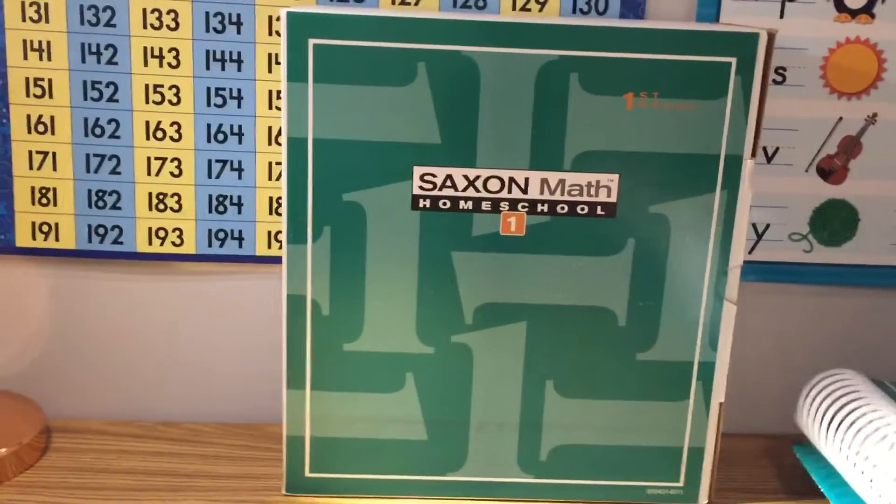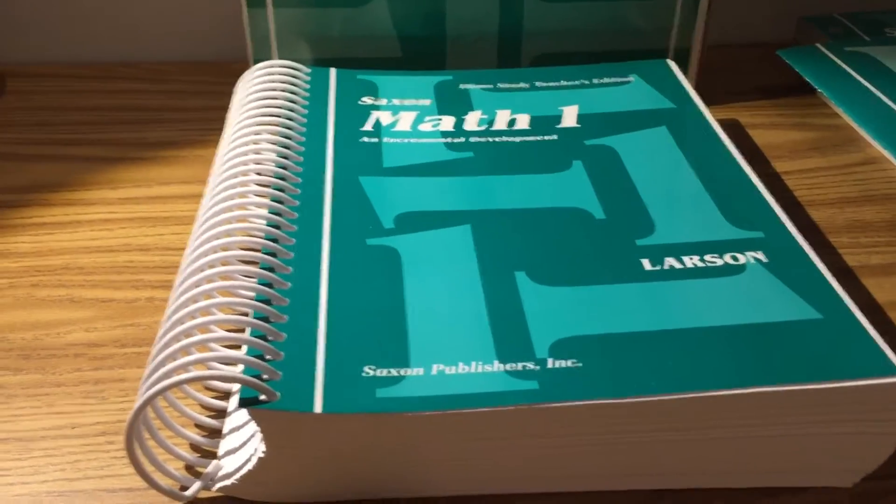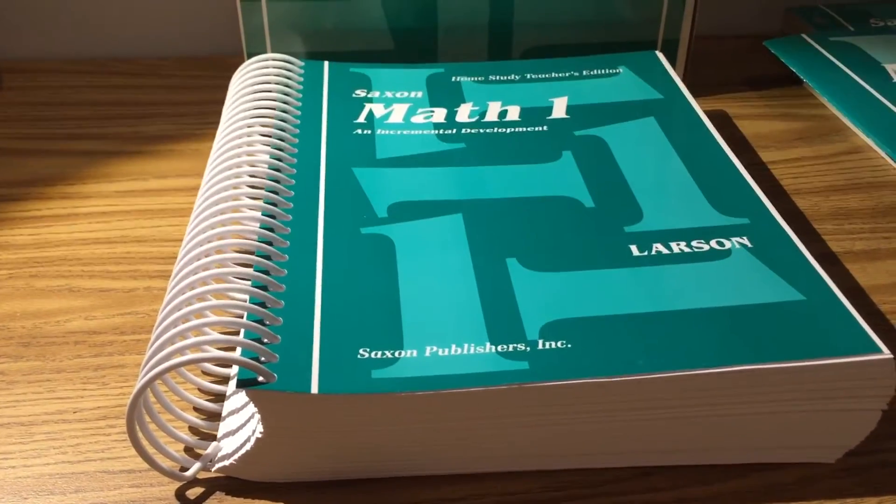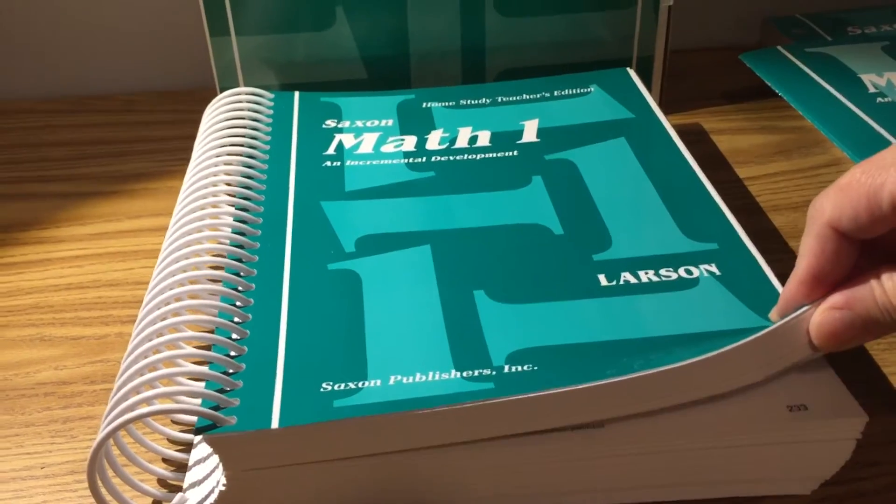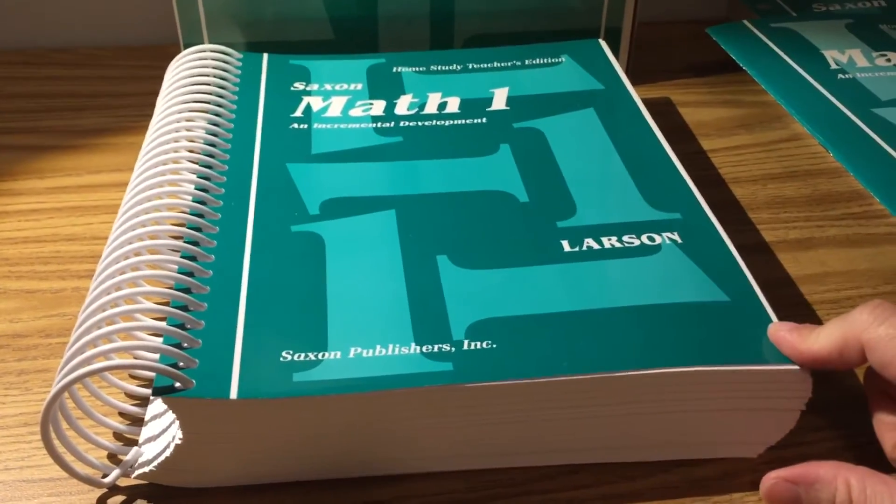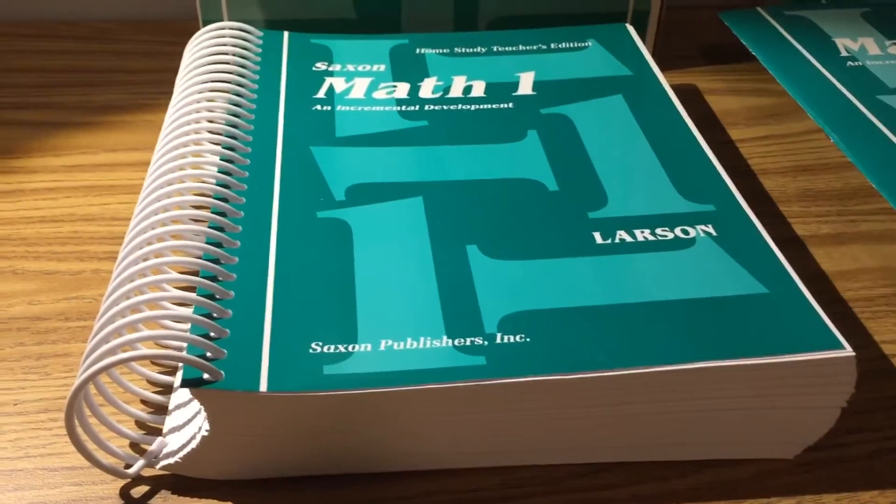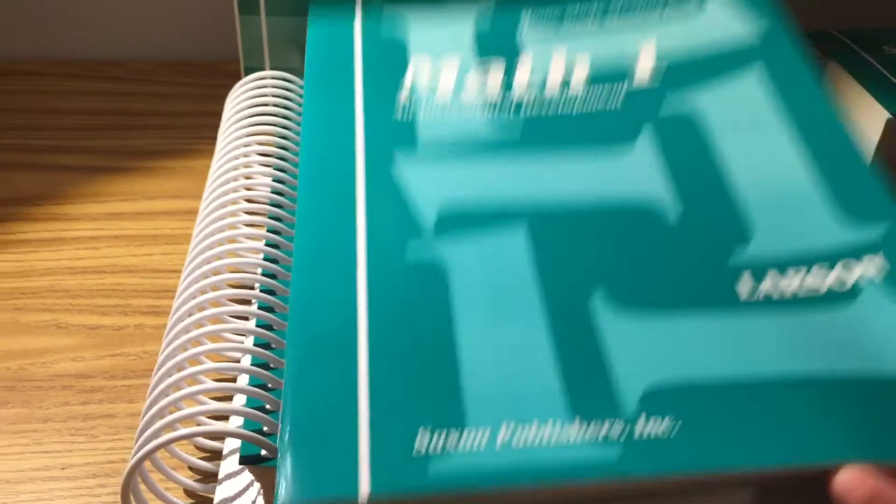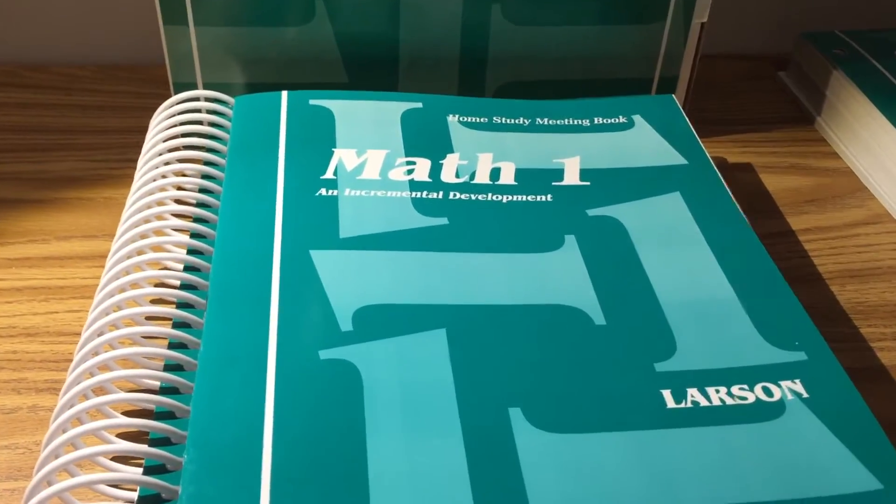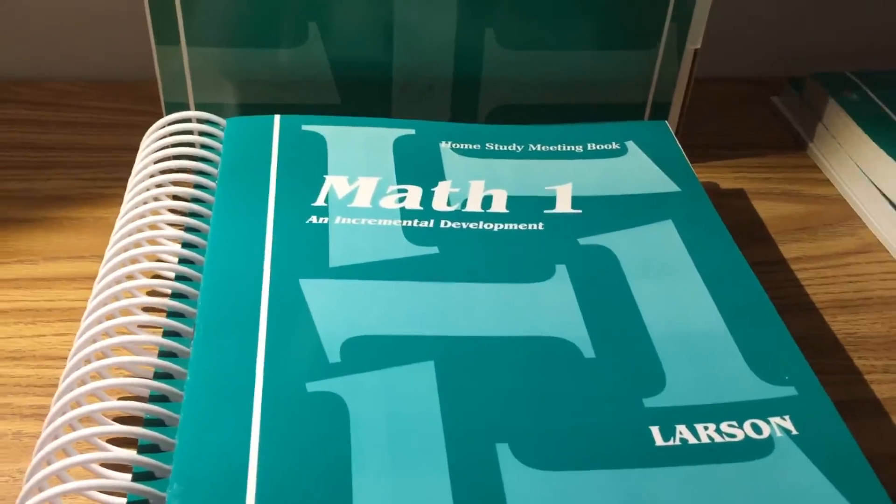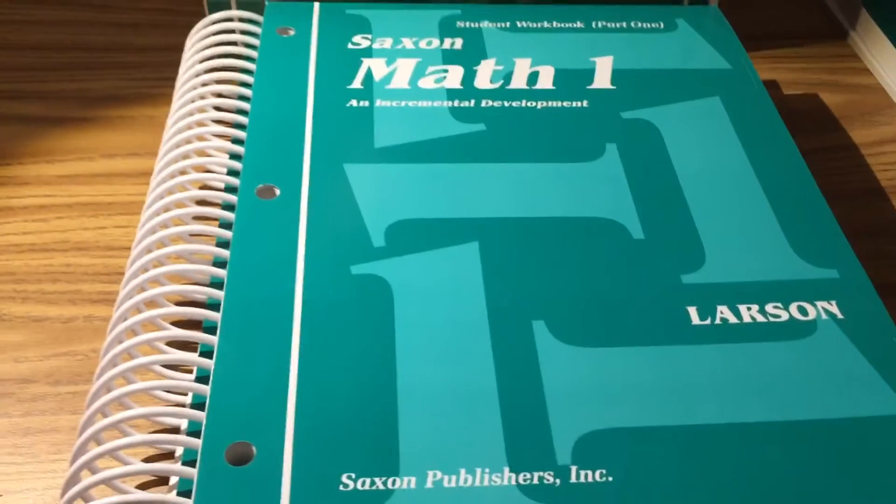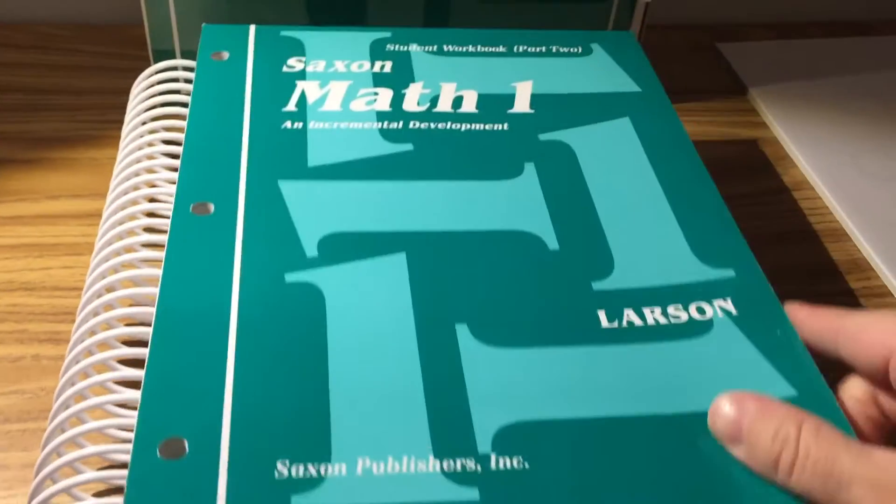Now what you receive with this is this teacher's manual. Now this teacher's manual has 703 pages. It is very hefty but it goes very quickly. When I show you what the lessons are inside and how it's laid out you'll see that it's really not that big of a deal that it's this big. Here is the home study meeting book, the student workbook part one, and the student workbook part two, and here's the perforated math fact sheets that you're going to be using.